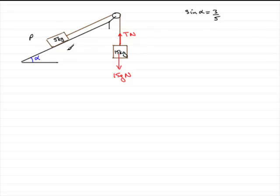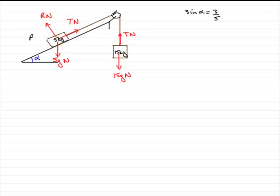Now we go over to P. We've got the weight, which is 5g newtons. There's a contact force — a normal reaction — going outwards, which I'll call R newtons. We've got the tension in the string connecting the two particles, and that too is T newtons. Why are they the same? Because the pulley is smooth. And because the plane is smooth, there's no friction on the particle. If there was, friction would act to oppose motion, acting down the plane, but there's none in this example.